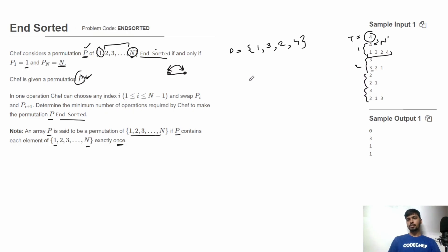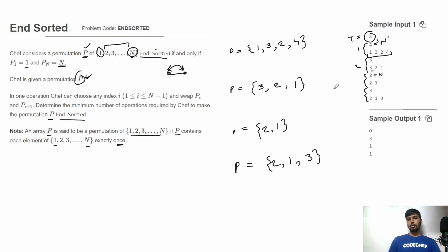For the second test case, P is 3 2 1. For the third test case, N is 2 and P is 2 1. For the fourth test case, P is 2 1 3. We just need to print the minimum number of operations required to convert P into N-sorted. In the first test case, 1 is at the first position and 4 is at the last position, so the sequence is already N-sorted and the answer is 0.